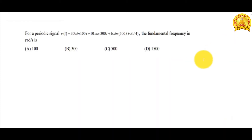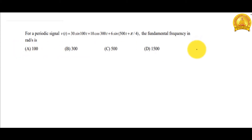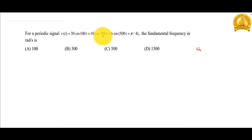This is our first question. For a periodic signal v(t) = 30 sin(100t) + 10 cos(300t) + 6 sin(500t + π/4), the fundamental frequency in radians per second is to be found. From this signal we have to find the fundamental frequency value, which should be in radians per second — so we have to calculate ω₀.